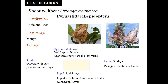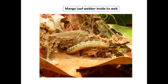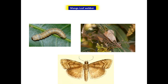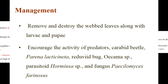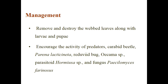Coming to shoot webber — Orthaga exvinacea, family Pyralidae, order Lepidoptera. Egg period is 4 days; larval period is 30 days; pupal period is 11–14 days. Adult is grayish with dark patches on pink. Symptom: caterpillar initially feeds on leaf surface gregariously by scraping, then makes webs on tender shoots and leaves and feeds within the webbed portion. Several caterpillars may be found in a single webbed cluster of leaves. Management: pruning followed by ploughing, and use of carbaryl or quinalphos.